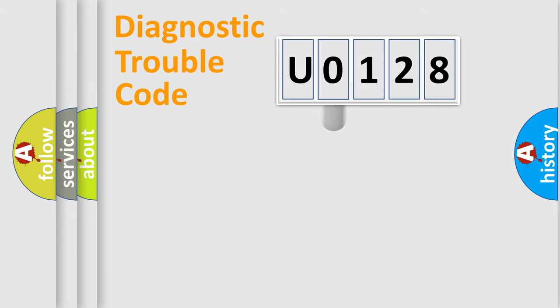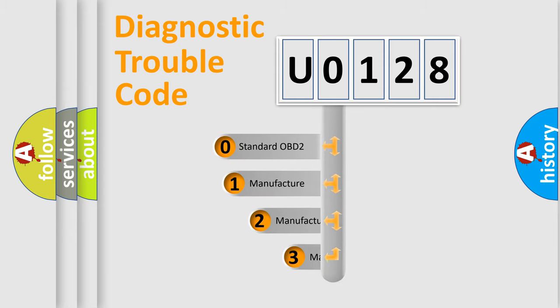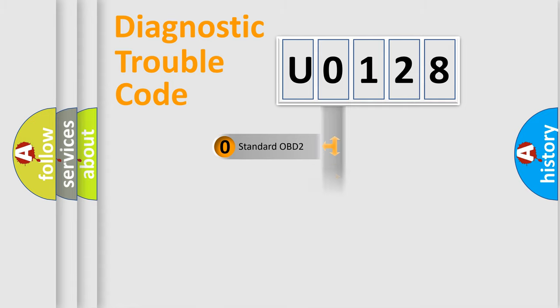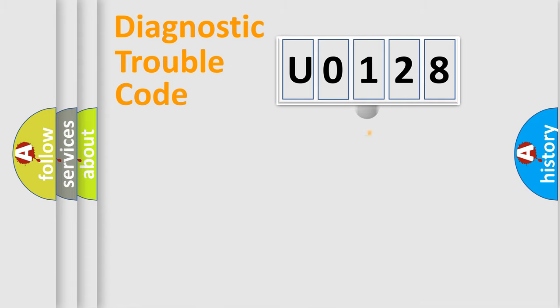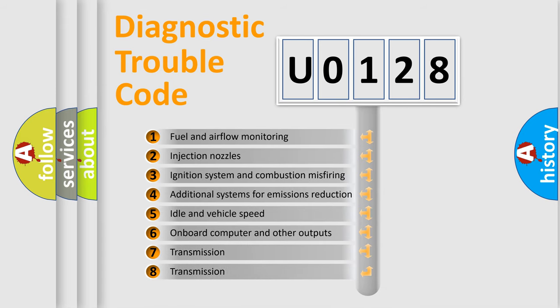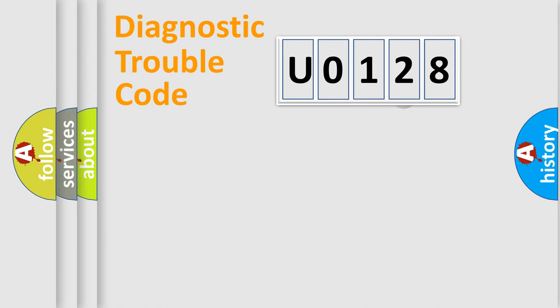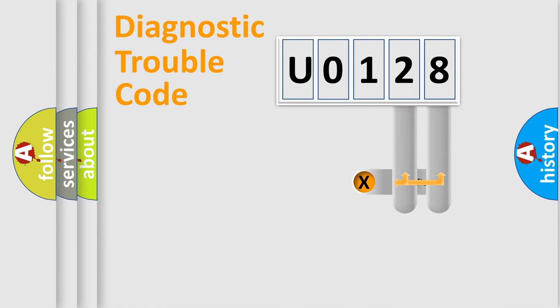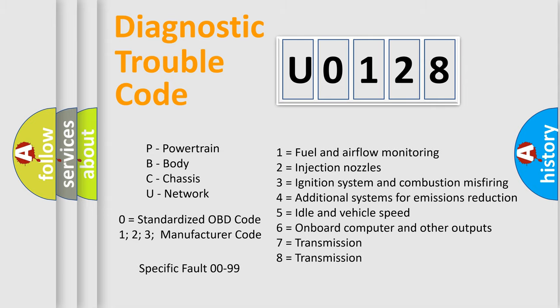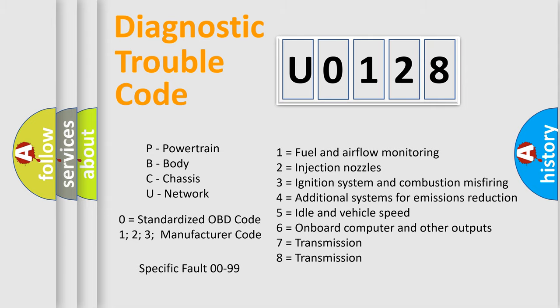This distribution is defined in the first character of the code. If the second character is expressed as zero, it is a standardized error. In the case of numbers 1, 2, or 3, it is a manufacturer-specific error expression. The third character specifies a subset of errors. This distribution is valid only for the standardized DTC code, and only the last two characters define the specific fault of the group.